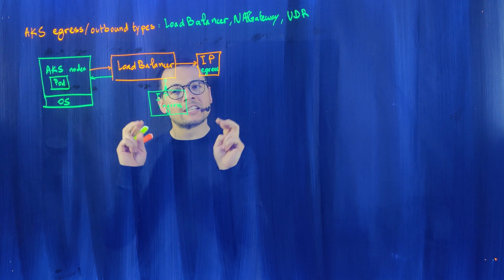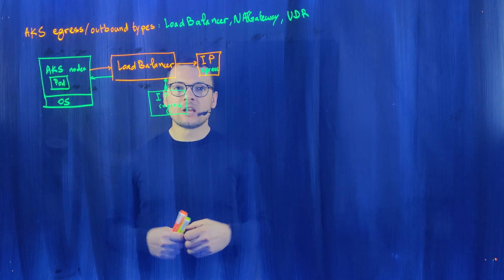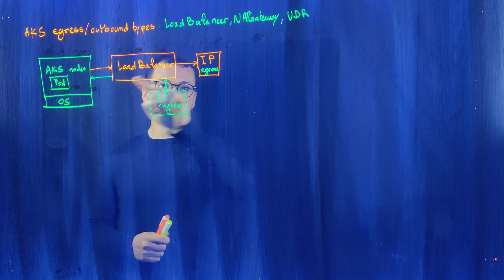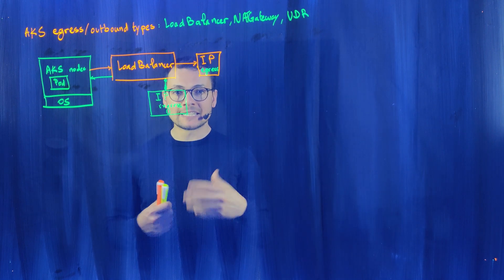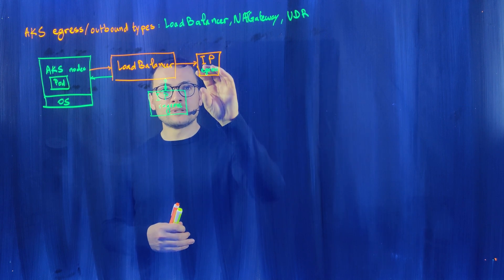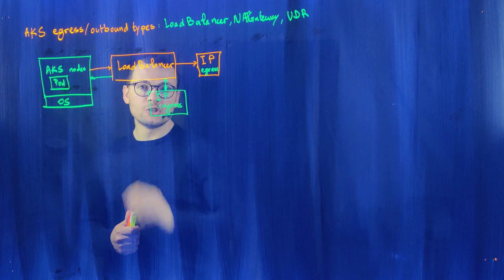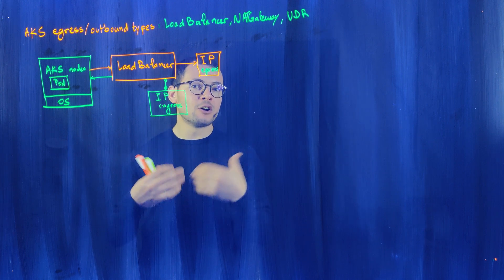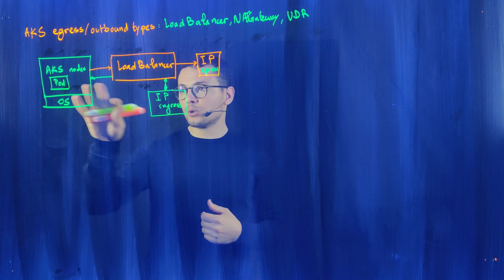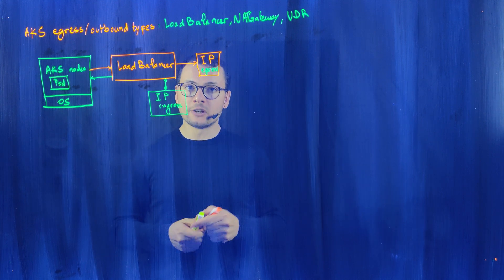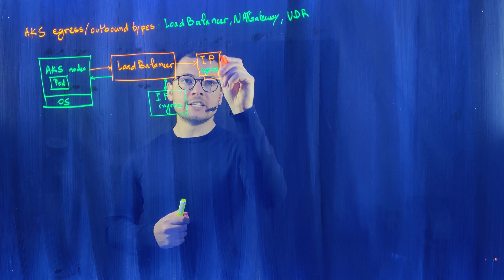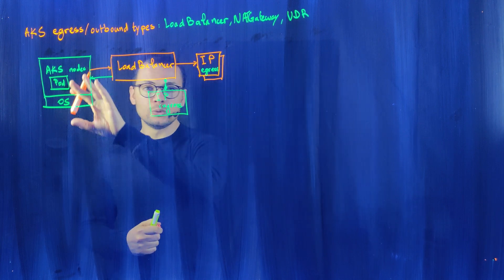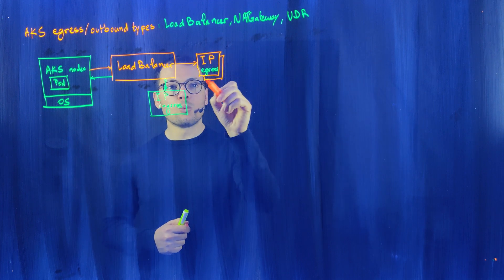This mode is fine until some scenarios trigger SNAT port exhaustion. Connections from pods or nodes go through the public IP, where SNAT occurs, with a specific number of SNAT ports pre-allocated per node. If a node needs more than its pre-allocated ports, the remaining connections will fail. One simple solution is to provision additional public IP addresses — each new IP adds more SNAT ports available to the cluster.